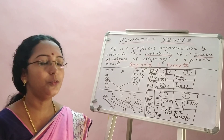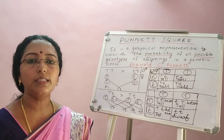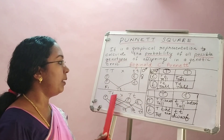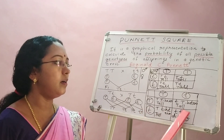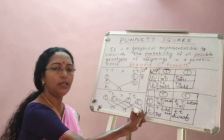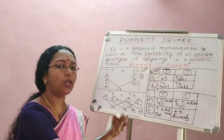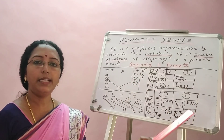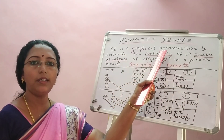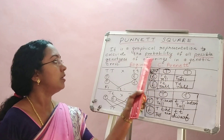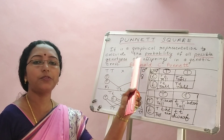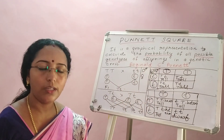The importance of this Punnett square will become more clear in the next video when we learn about the dihybrid cross. In a dihybrid cross, the number of gametes and offsprings increases — instead of 4, you get 16 offsprings. It would be very difficult to work out genotypes without the Punnett square. So today we have learned the Punnett square: a graphical representation to calculate the probability of possible genotypes of offsprings in a genetic cross. Thank you, we will see in the next session.